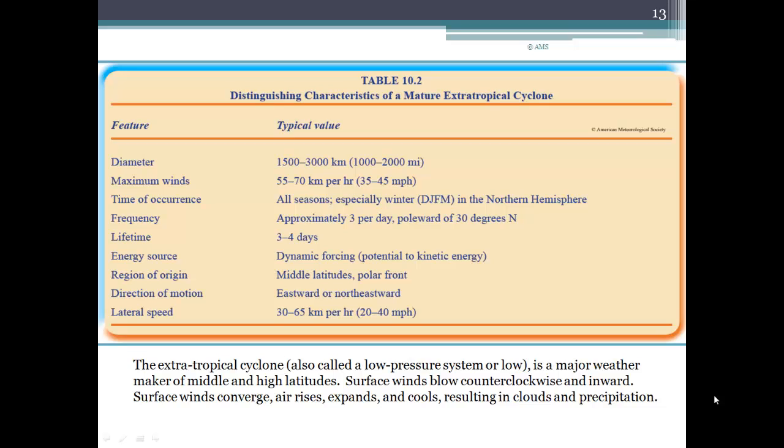The size of them ranges from 1,000 to 2,000 miles. Maximum winds anywhere from 35 to 45 miles per hour. They occur in all seasons, especially in winter in the northern hemisphere. And they happen pretty consistently. There's approximately three per day, poleward of 30 degrees north. So it's not just one that we're dealing with. We have a big country, so we can be dealing with several of these cyclones.